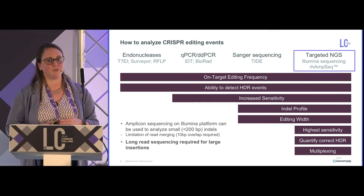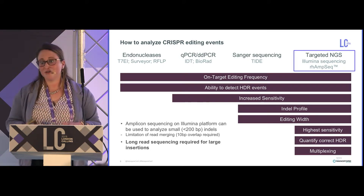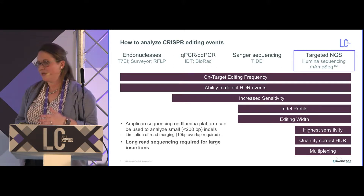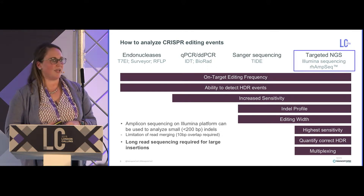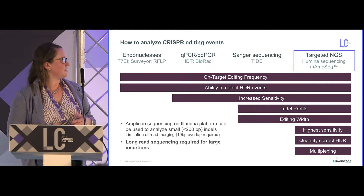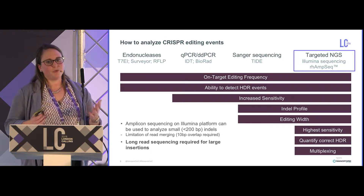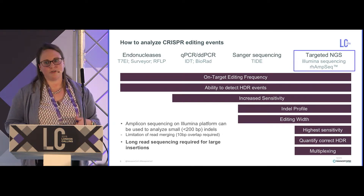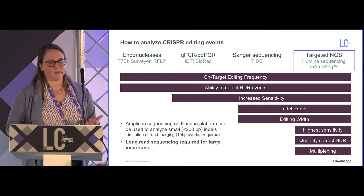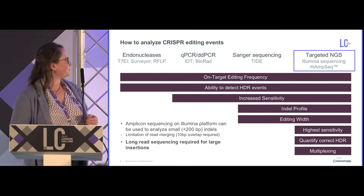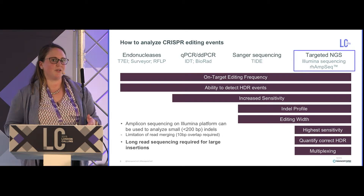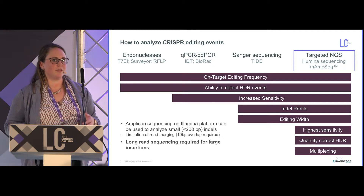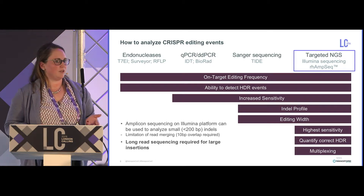Amplicon sequencing on Illumina has been very efficient for us when looking at small insertions. But of course, it's not able to look at these large 300 to 1,000 base — and even larger — insertions that we're generating by HDR. We really needed long-read sequencing to start capturing that information accurately.